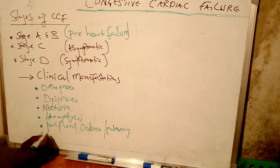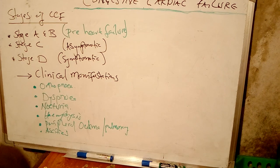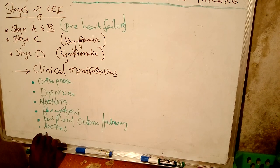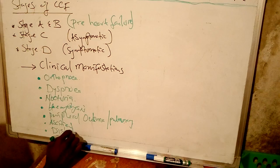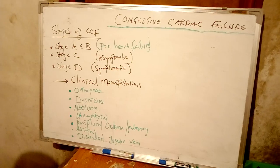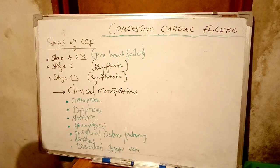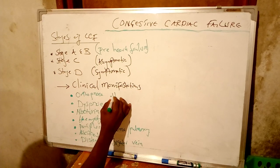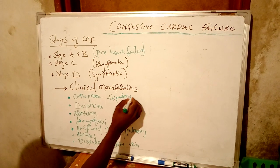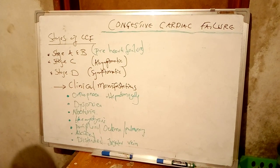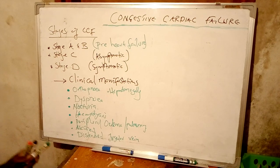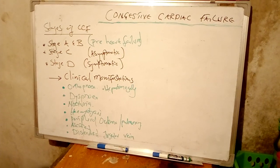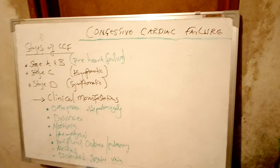There will also be ascites, as a result of fluid movement. The patient will also have a distended jugular vein because of backflow of blood into the superior vena cava. The patient will also have hepatomegaly, which is enlargement of the liver, because of backflow of blood into the liver. There are many more signs and symptoms, but let us now look at the management.